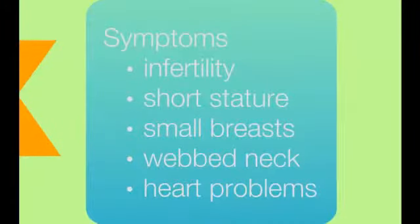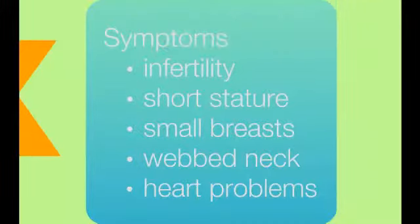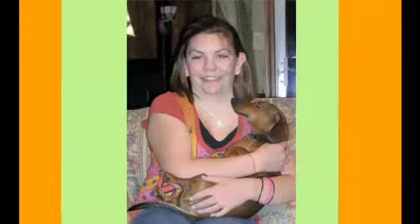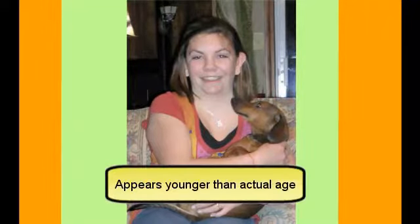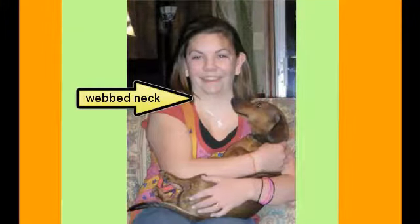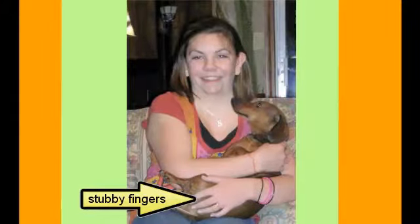Women with Turner syndrome are almost always infertile. They tend to be short, their breasts tend to be much smaller than normal, they have a webbed neck — extra flaps of skin on their neck — and they tend to have heart problems. Here is a girl with Turner syndrome who is about to graduate from high school but appears much younger. You can see her neck looks too wide due to the extra skin, and her fingers are short in proportion to her palms.